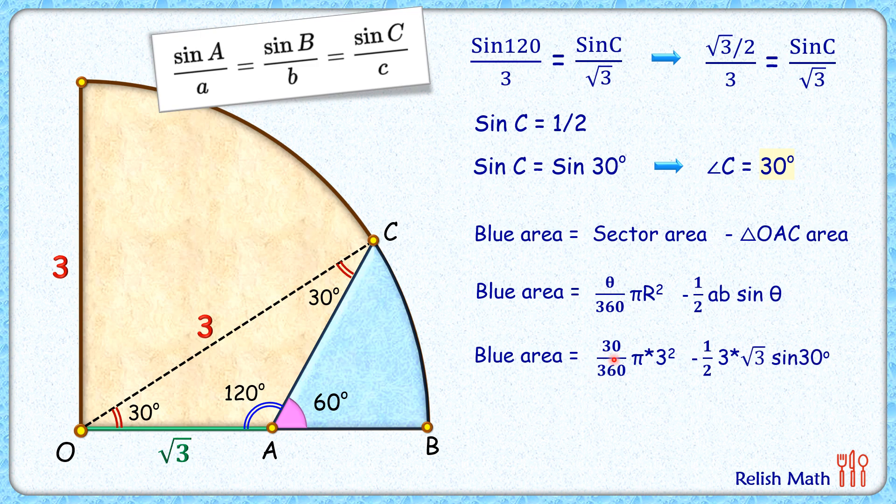Putting the values and solving: 30/360 is 1/12, and simplifying, we get 3π/4. Putting sin 30° as 1/2, we get 3√3/4. So the blue area is 3π/4 - 3√3/4 square centimeters, and that's our answer.